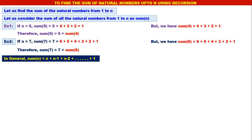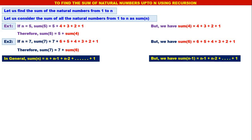In general, sum of n is n plus (n-1) plus (n-2) plus dot dot dot up to 1. But we have sum of n minus 1, which is (n-1) plus (n-2) plus ... up to 1. Therefore, in sum of n, instead of (n-1) plus (n-2) plus ... up to 1, we can write sum of n minus 1. That is, sum of n is equal to n plus sum of n minus 1.